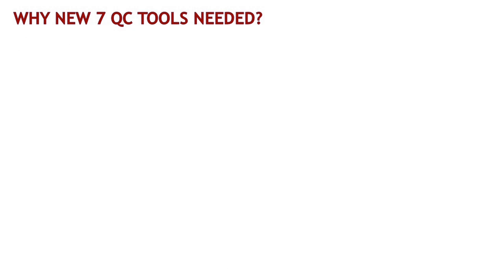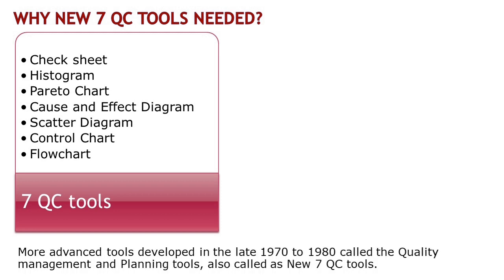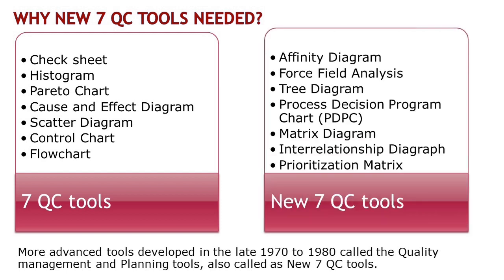In the world of quality management, Dr. Kaoru Ishikawa created the original 7 QC tools, which were widely used to solve quality problems. But as time passed, quality management became more complex, giving rise to new challenges. To tackle these challenges, more advanced tools were developed in the late 1970s. These tools are known as the Quality Management and Planning tools, or the new 7 QC tools, specifically designed to address the growing complexity of quality management. They offer additional techniques for problem solving and decision making.